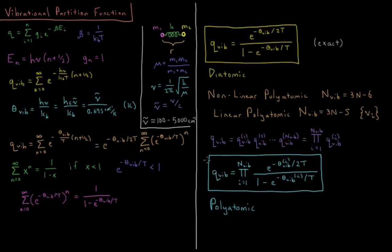For translations, there are an enormous number of states occupied at 300 kelvin for most molecules. For rotations, there are typically on the order of 10, 20, or 30 rotational levels occupied. But these energy separations are getting quite large, and so for vibrations at 300 kelvin, most molecules are in the ground state. So your vibrational partition function is usually some number slightly bigger than 1, like say 1.03, 1.01, or 1.001, because most molecules are in the ground vibrational state at room temperature.